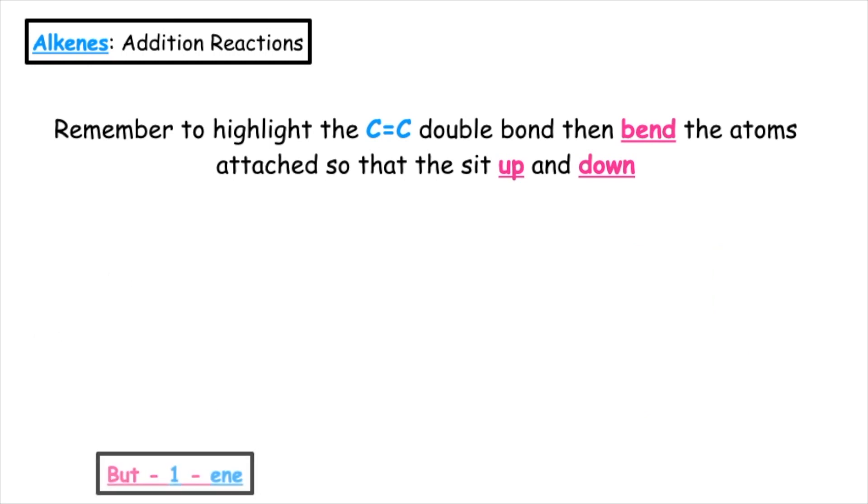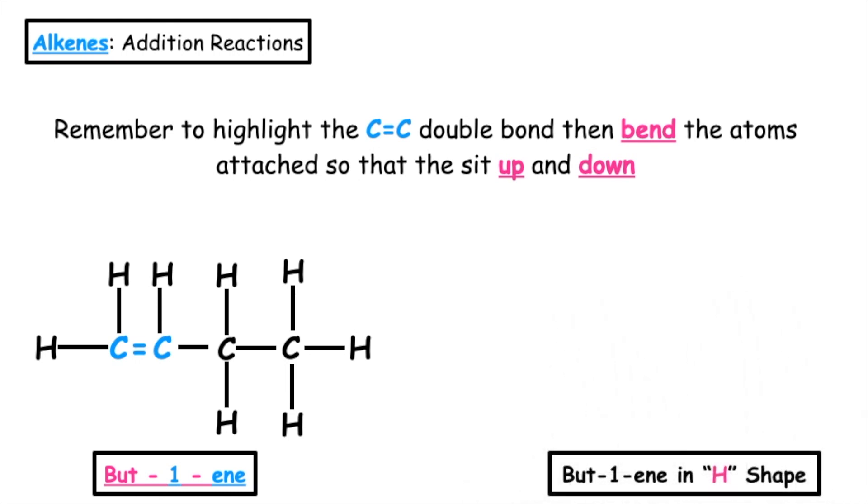If we have but-1-ene, the carbon-to-carbon double bond is in position one. We'll highlight that. And then we bend down the hydrogen, bend down the C2H5, and that gives us our but-1-ene in the H shape.